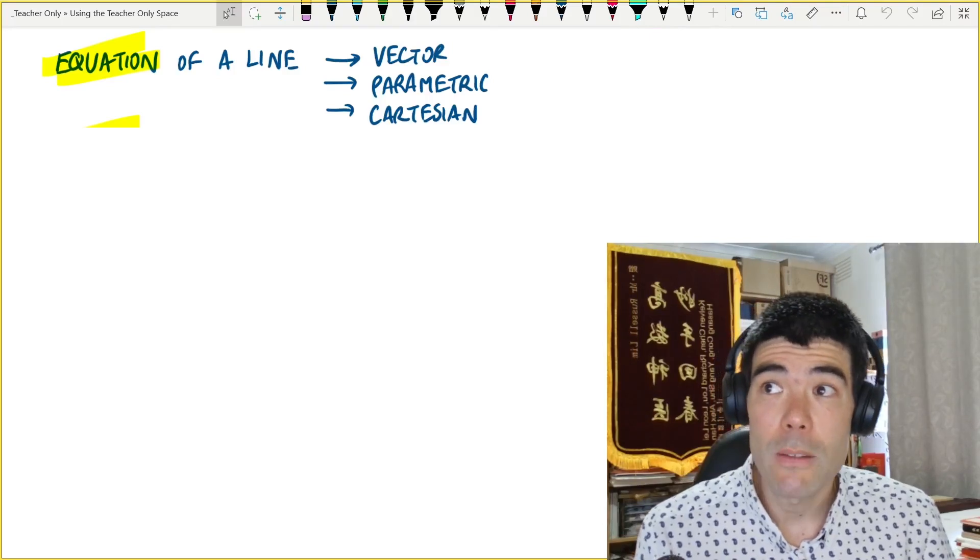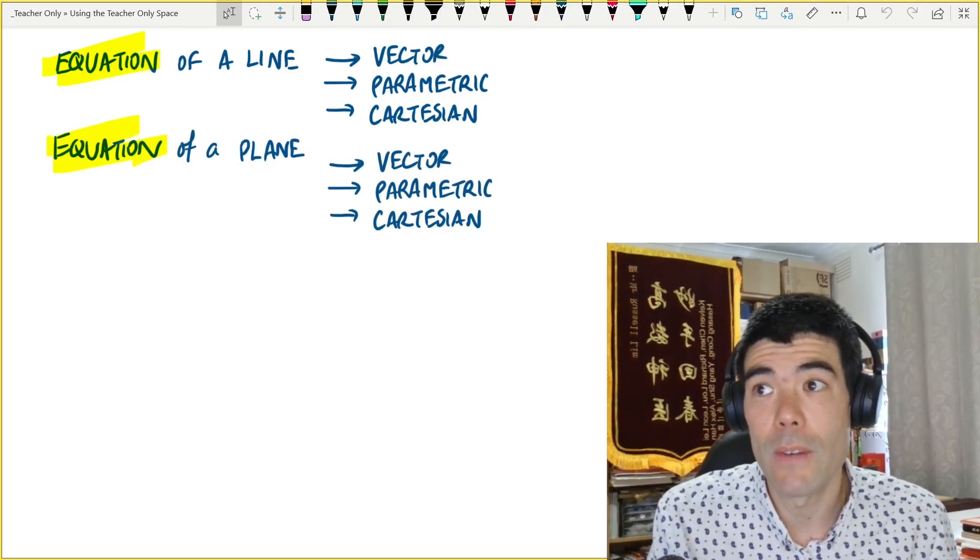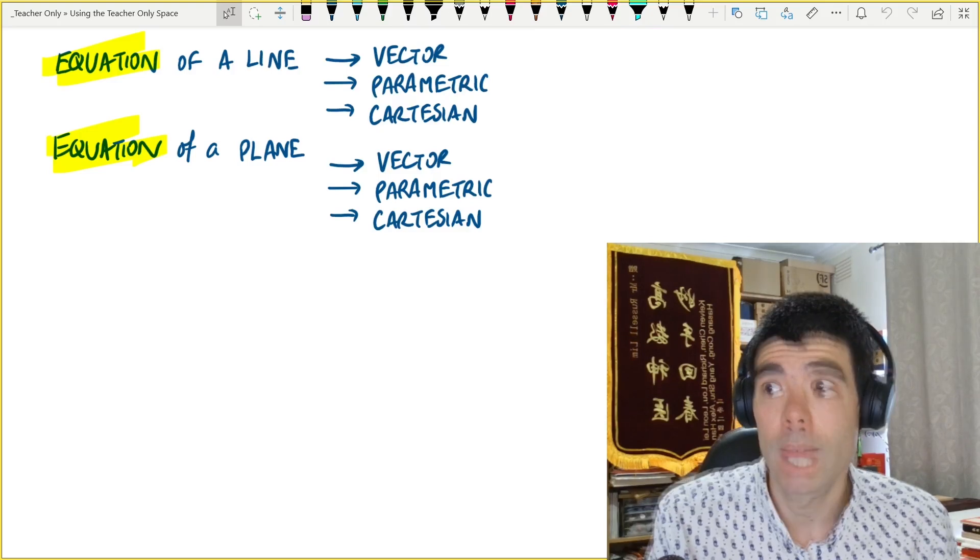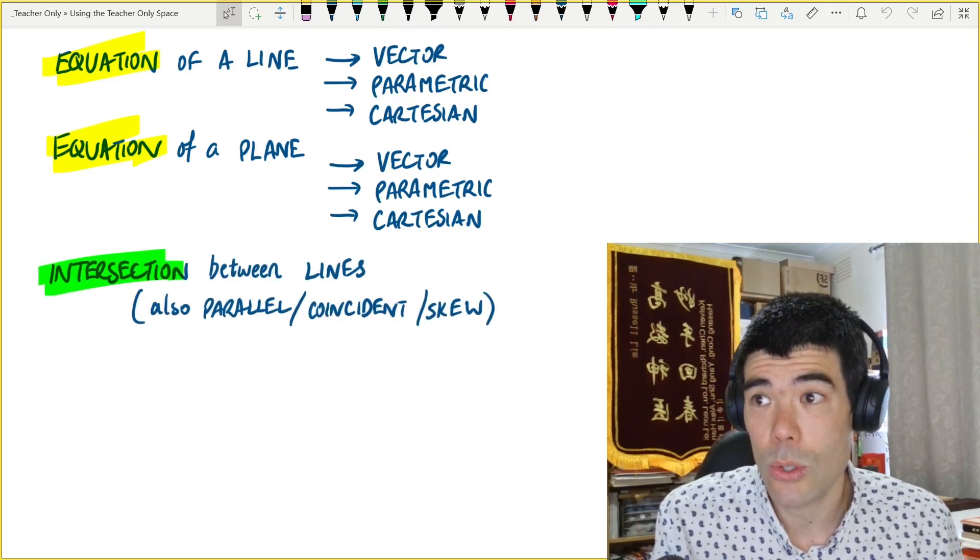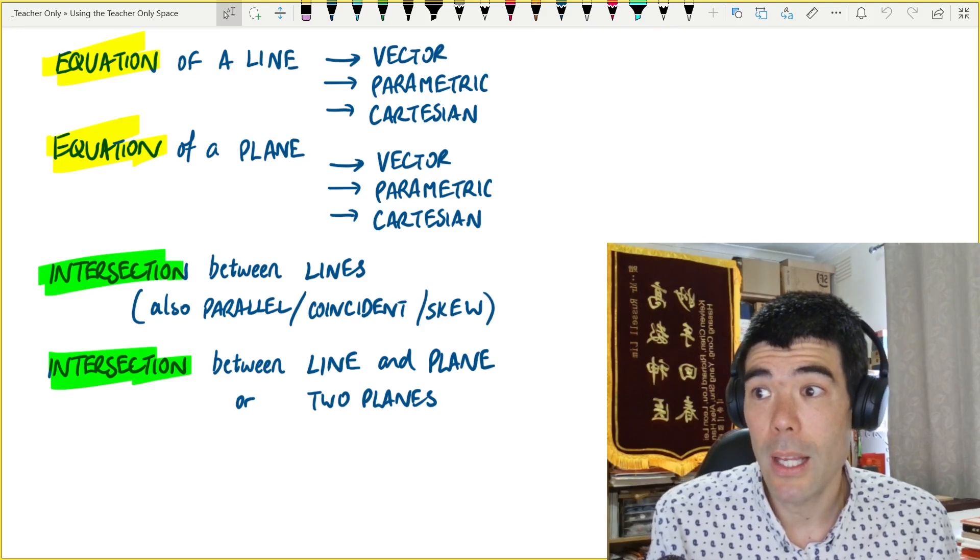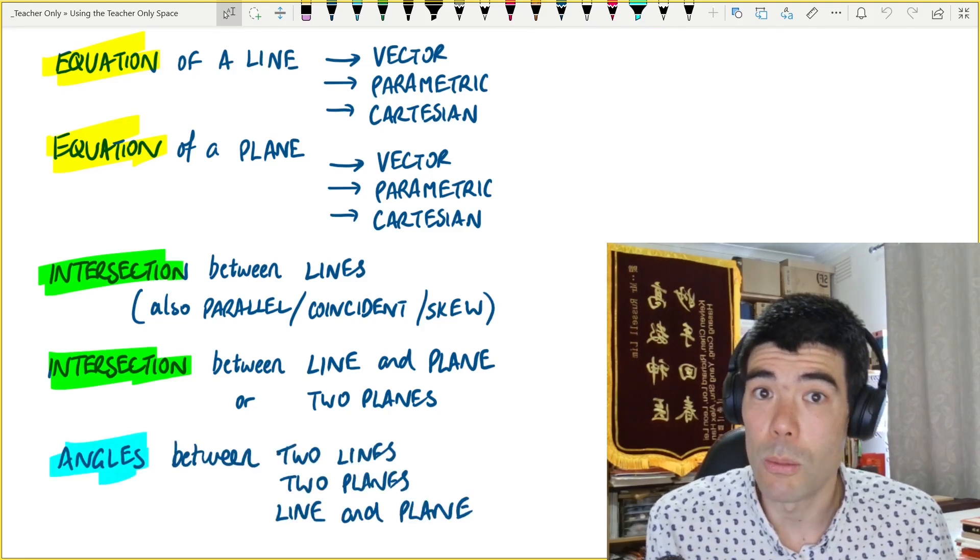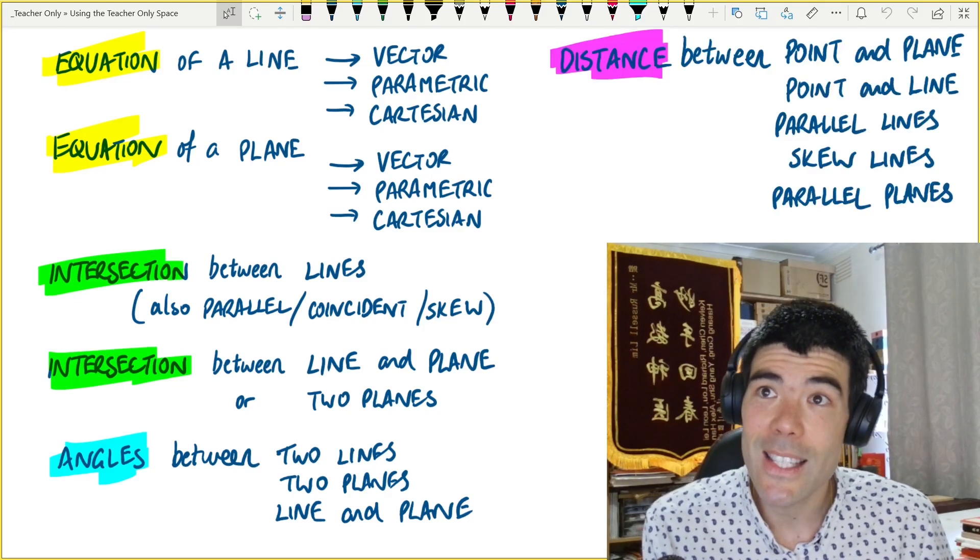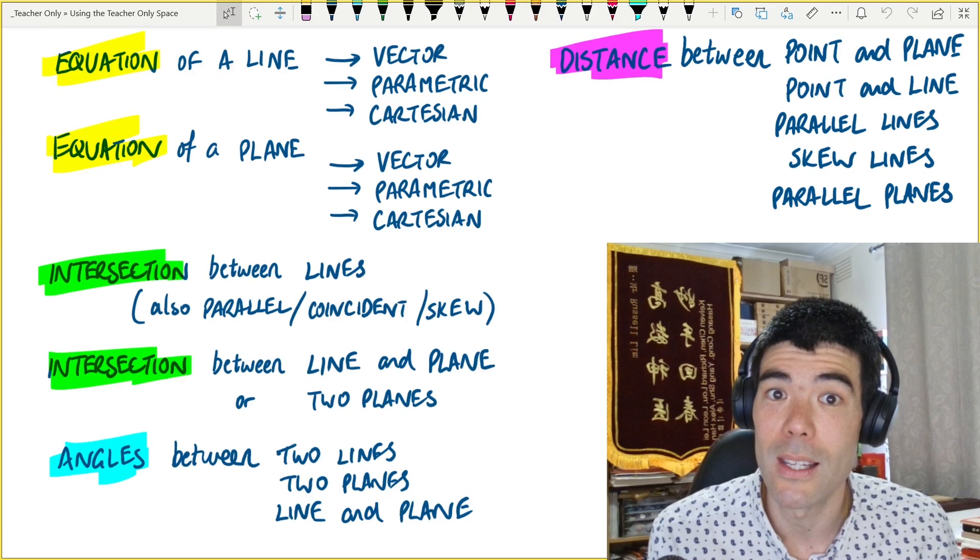An equation of a line, we have the vector form, parametric form and Cartesian form. Equation of a plane, also vector, parametric and Cartesian. Intersection between lines, or lines that are parallel, coincident or skew. Intersection between a line and a plane, or two planes. Angles between two lines, two planes, or a line and a plane. Then distances between points and lines, points and planes, parallel lines, skewed lines, parallel planes.